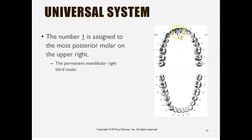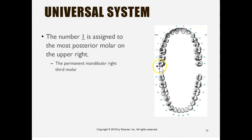Sometimes people have their wisdom teeth extracted. Let's say all wisdom teeth are extracted and you only have your second molars — we still call the second molar number two. This is because number one is always reserved for the third molar on the upper right. Even if it's been extracted, the numbering doesn't shift. Number one always refers to the third molar whether you have it or not, and the upper left third molar is always number 16.